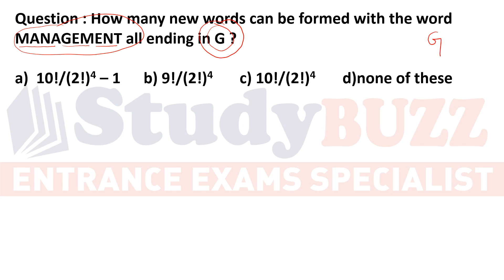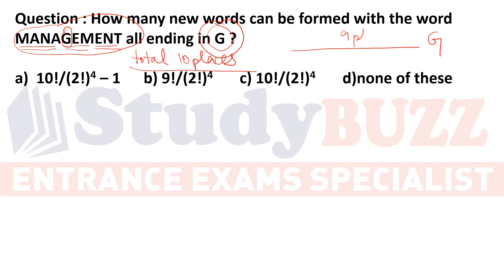We fix G at the last position and arrange the remaining 9 letters. The total places are 9. We just need to find all possible words using these 9 letters.